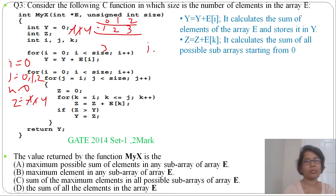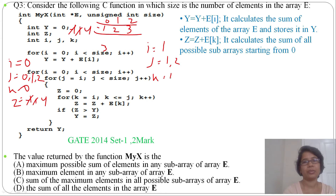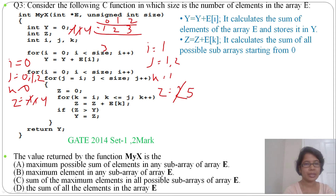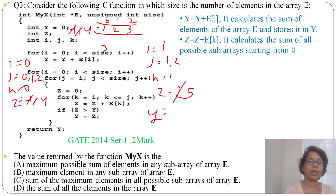Next, try i equal to one. When i equals one, j equals i, j less than size means j will be one and two. k starts at one and adds just e[1]=two, so z is two. Next j equals two, k adds e[1] and e[2], two plus three equals five. The condition says if z is greater than y, then y equals z. When i is one, z is five, which is greater than y, so y is updated to five.